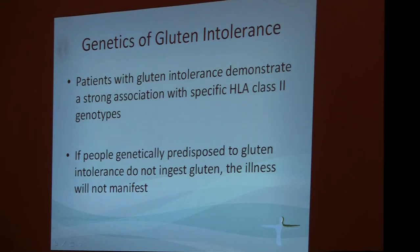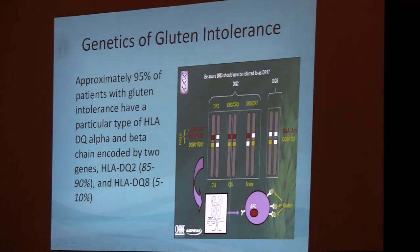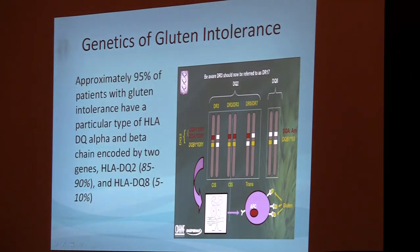Gluten intolerance is a genetic disease. Approximately 15 to 20 years ago, many studies were published showing that gluten intolerance is associated with so-called HLA class 2 molecules. If you have a genetic predisposition and don't consume gluten, you're not going to develop the disease — but if you do consume gluten, you will develop it. There are two main genes identified: HLA-DQ2 and HLA-DQ8.